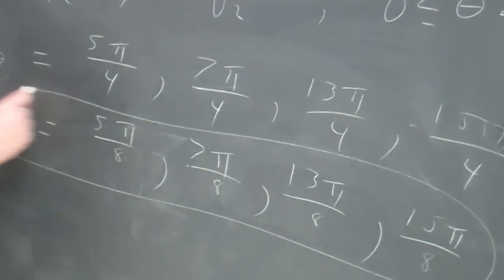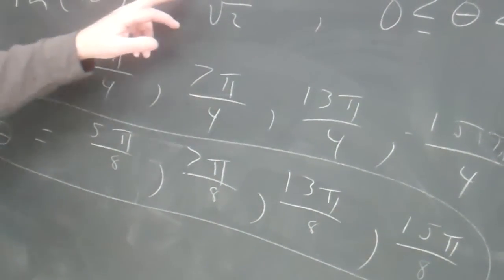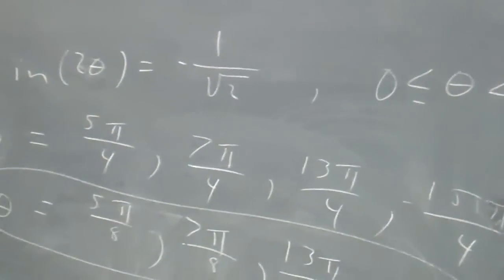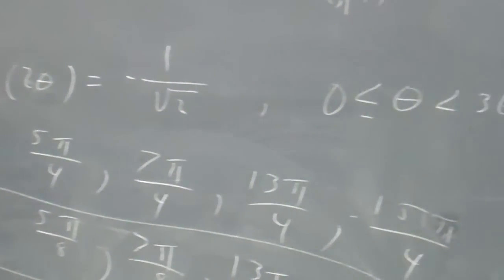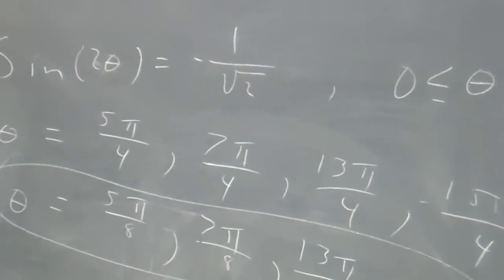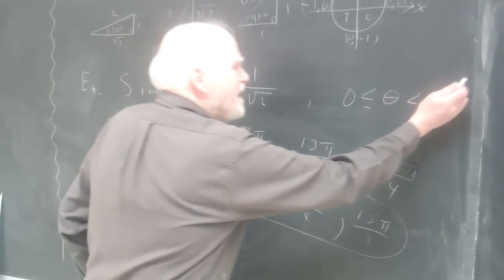If I put any of these thetas into here, I will get negative 1 over the square root of 2. But you asked the questions in degrees and you answered in radians. That's correct. What are those angles in degrees? I can fix that.